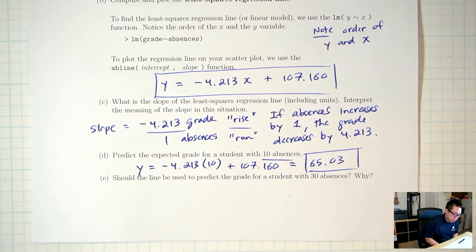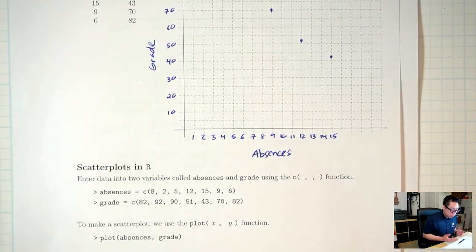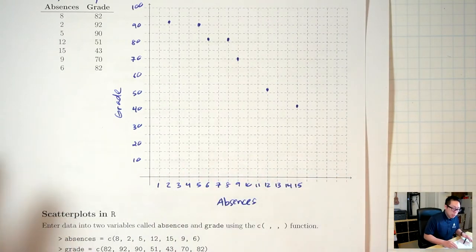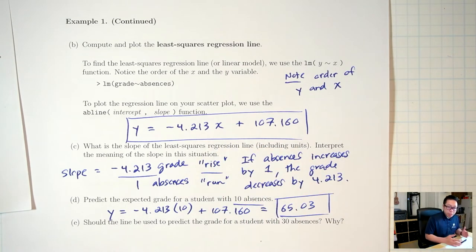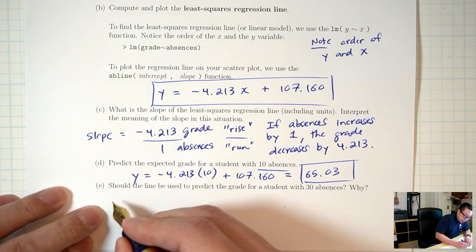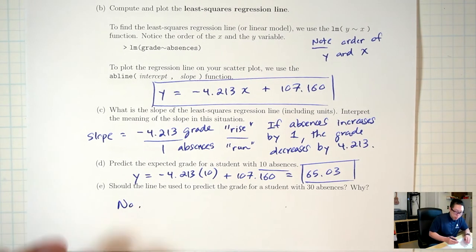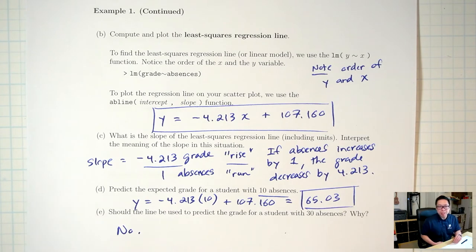Part E: should the line be used to predict the grade for a student with 30 absences? No — our original data only went from 1 to 15 absences, so 30 is way outside our data. Using the equation outside the data range could be inaccurate; if you plug in 30 you'd get a negative score, which doesn't make sense.